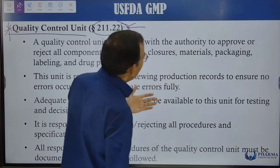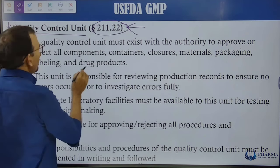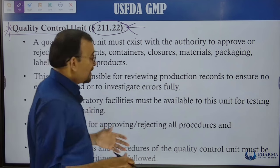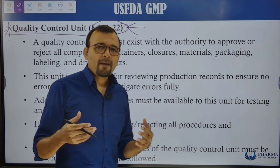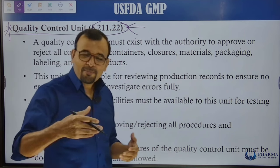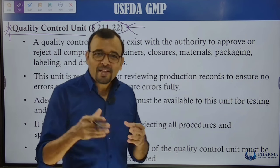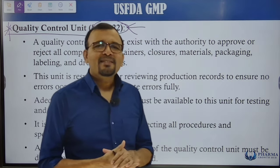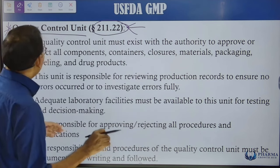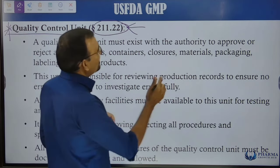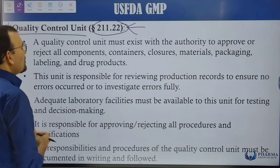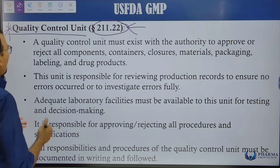The Quality Control Unit must exist with authority to approve or reject all components, containers, closure materials, packaging, labeling, and drug products. Whatever materials get tested in the laboratory can either be released or rejected, and there must be authorized personnel available to make that decision.